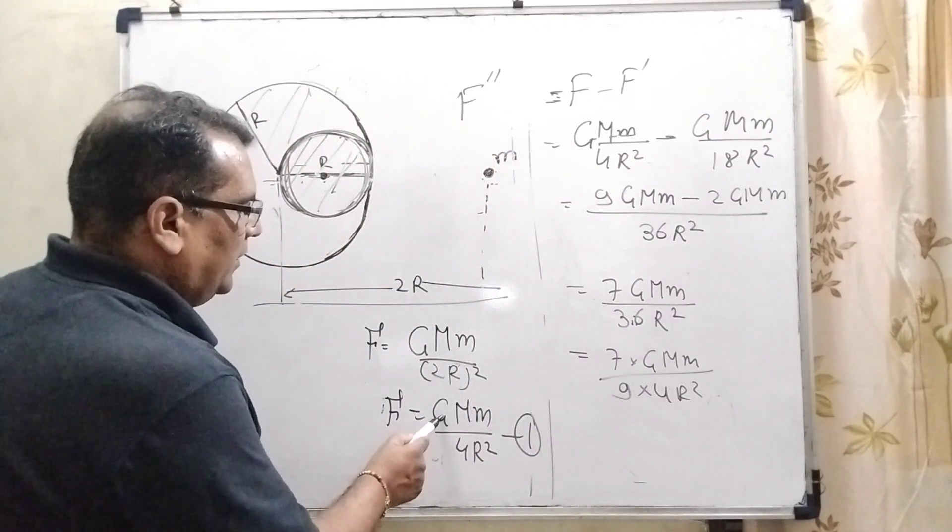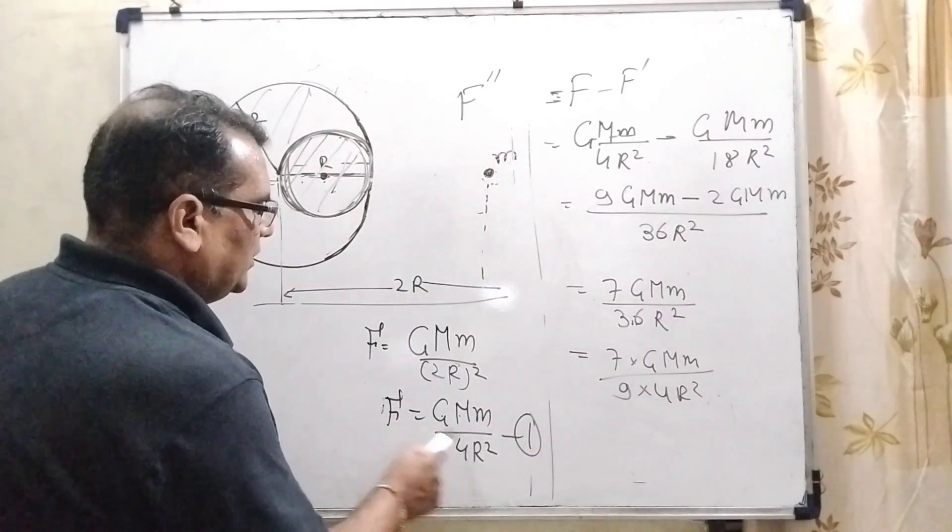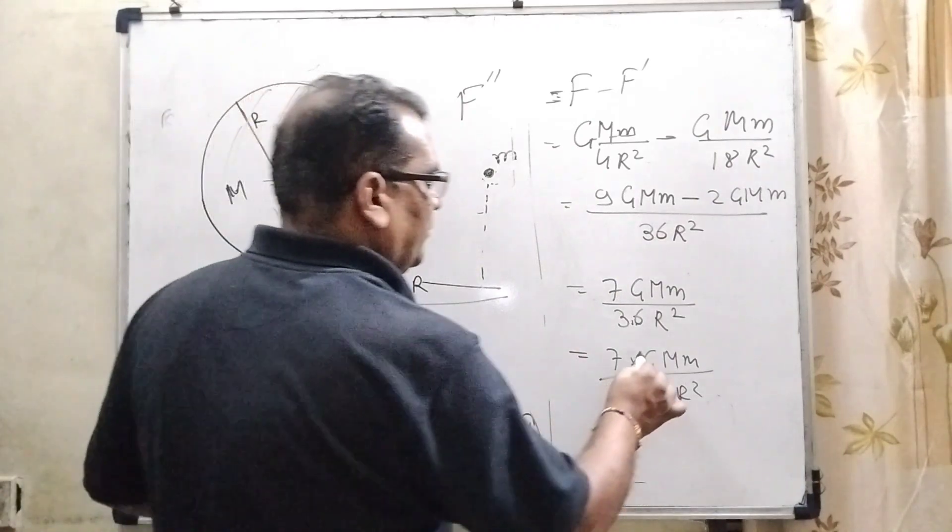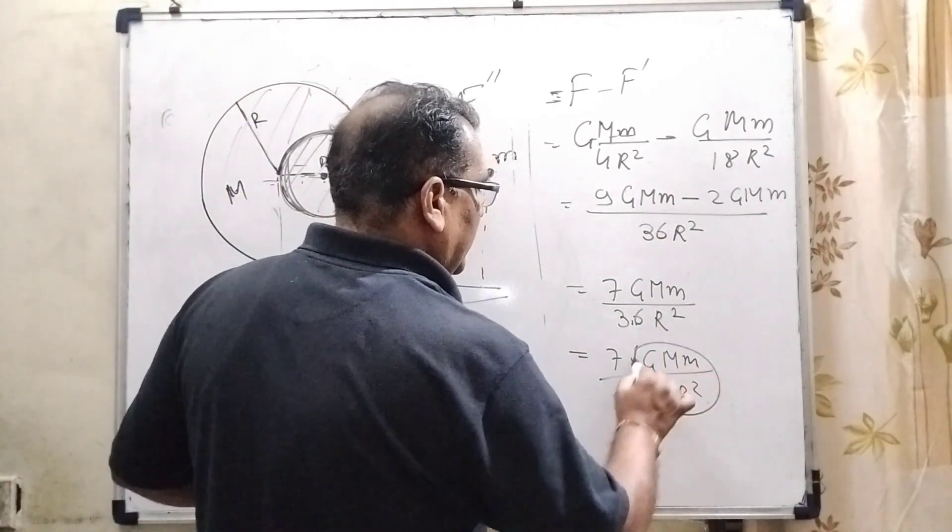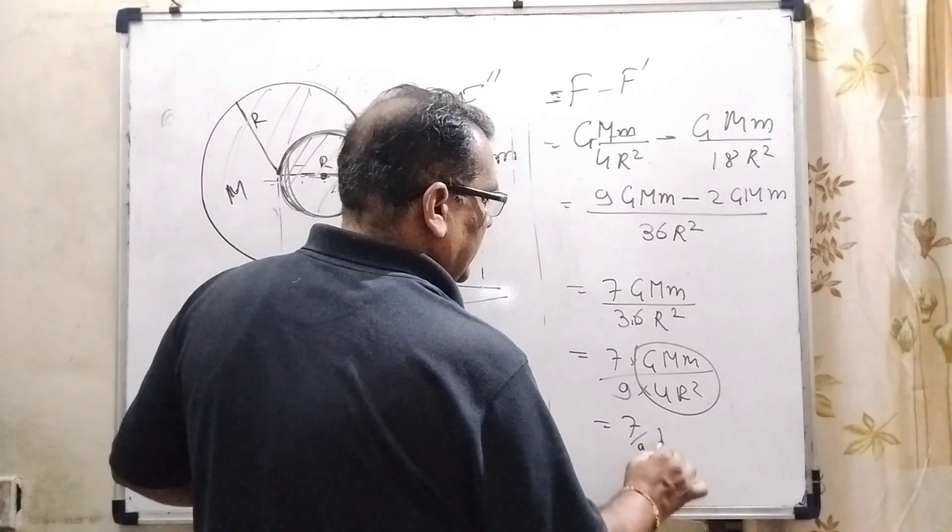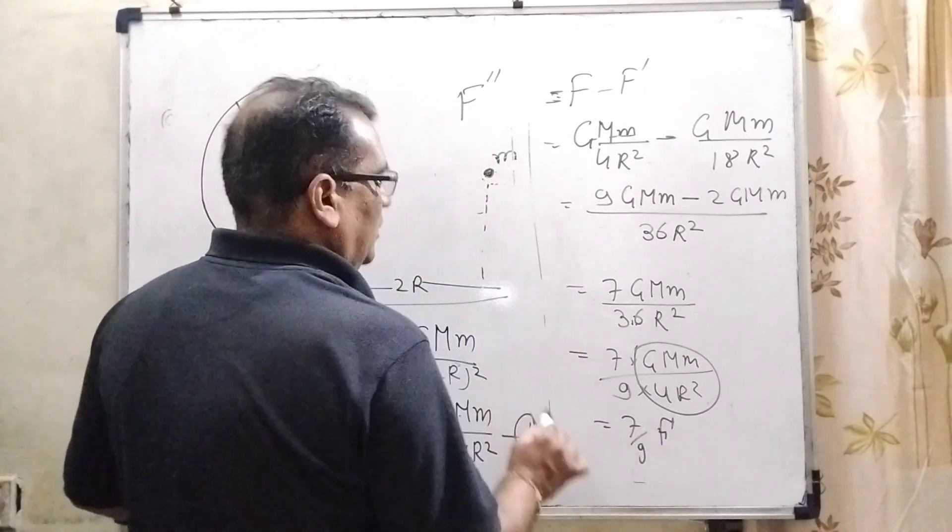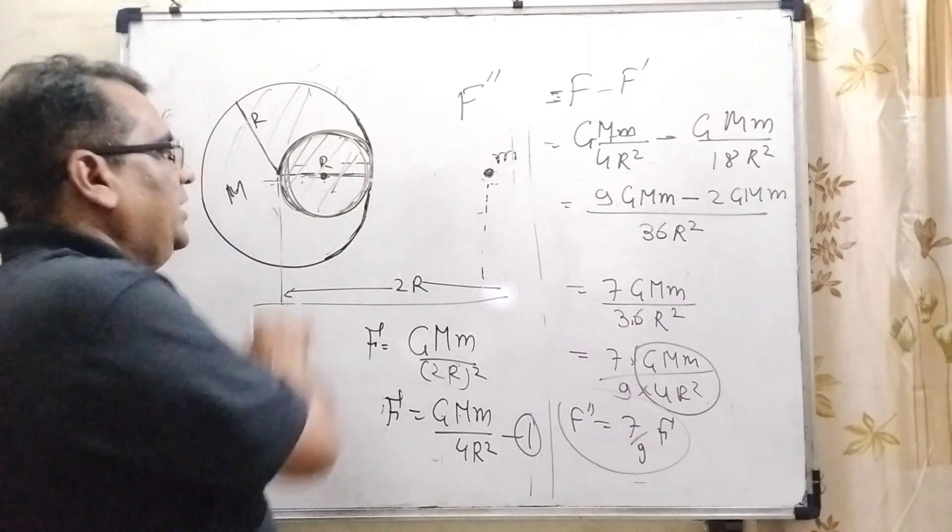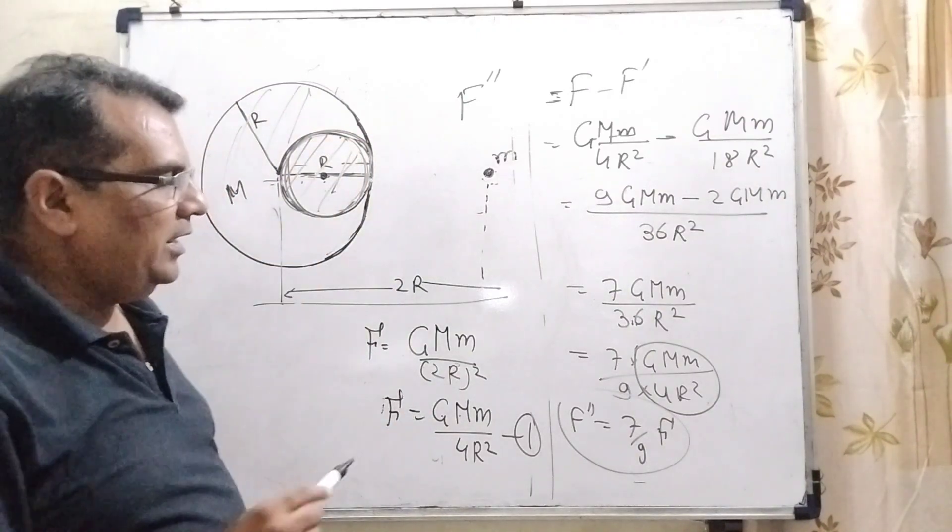Now let's see here, G M m divided by 4R square, that is f. So the force of remaining body is 7 by 9 f.